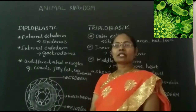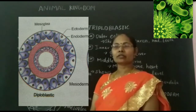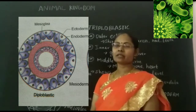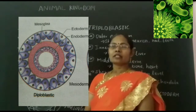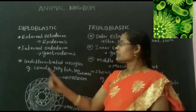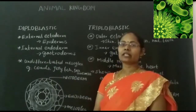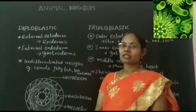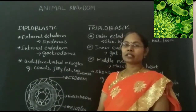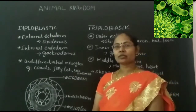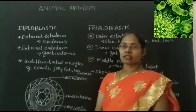If the animal has two embryonic layers — outer ectoderm and inner endoderm — these animals are said to be Diploblastic animals. In these animals, the external ectoderm forms into epidermis, which is the outer layer of the animal. And the second layer, the internal endoderm, forms into gastrodermis, which means gut, or otherwise the digestive system.